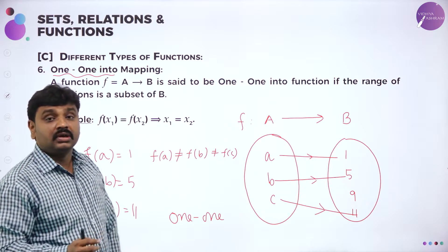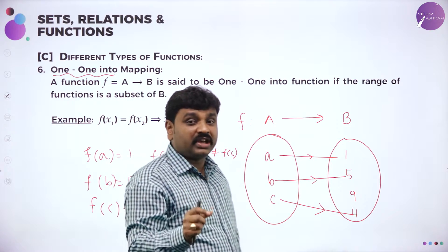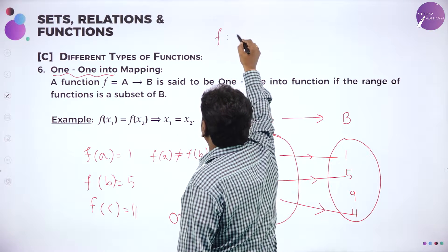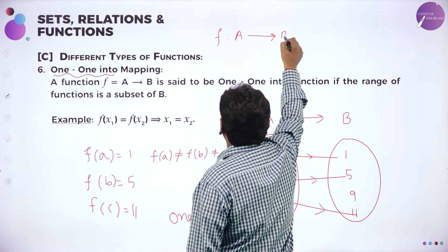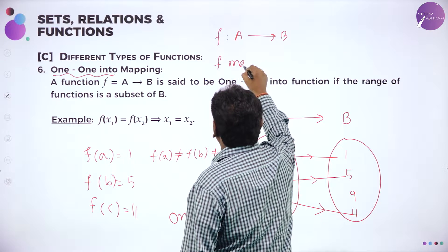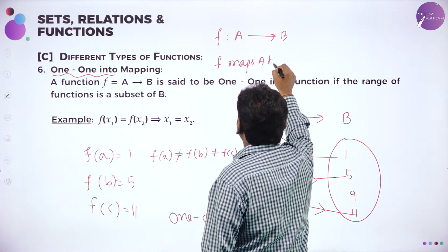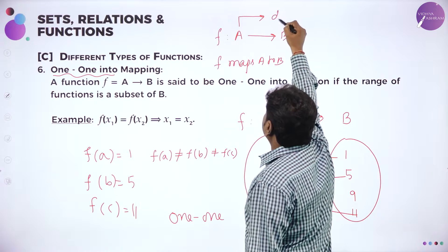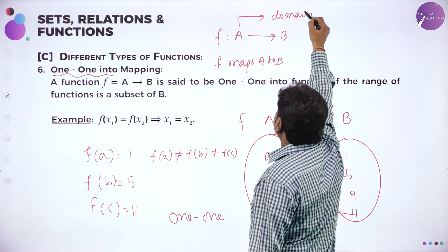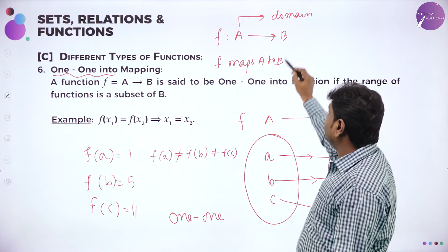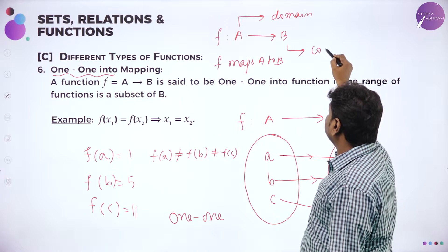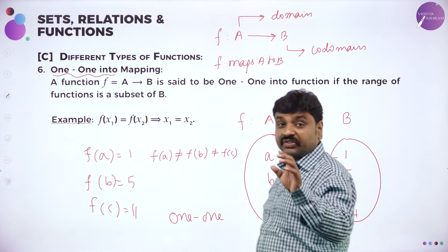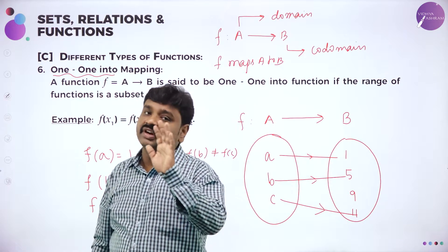What is meant by one-to-one? Different elements in domain should have different images. See, if f maps A to B — I told you how to read this: F maps A to B. In this, A is called as domain, first set is called as domain. And B is called as codomain, second set is called as codomain. And one-to-one means different elements in domain should have different images.